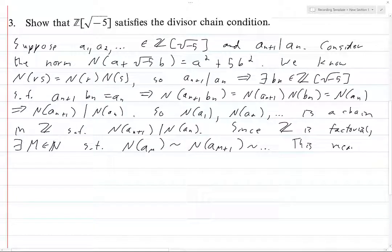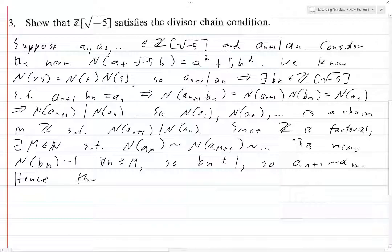This means N(b_n) equals 1 for all n greater than or equal to capital M, which means b_n equals plus or minus 1, so a_{n+1} is equivalent to a_n. Hence the divisor chain condition is satisfied because we have proven that a_M is equivalent to a_{M+1} is equivalent to a_{M+2} and so on up through infinity. We're done.